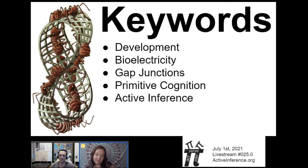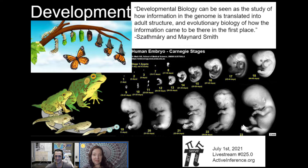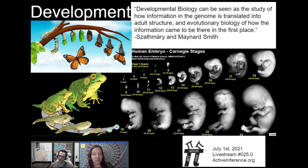The provided keywords were development, bioelectricity and the related gap junctions, primitive cognition, and our favorite, active inference. For development, I like this quote: 'Developmental biology can be seen as the study of how information in the genome is translated into the adult structure, and evolutionary biology of how the information came to be there in the first place.' That's a cool definition of development.